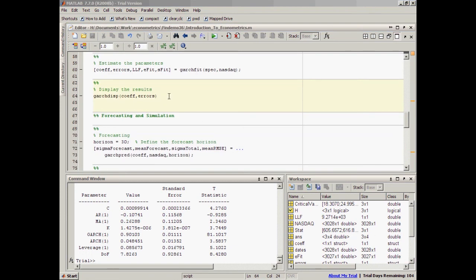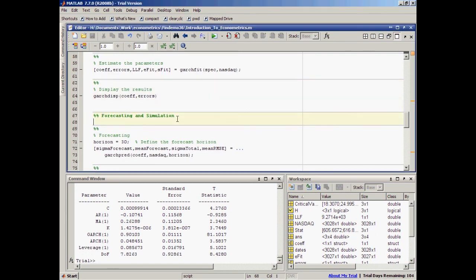Okay, now that our model parameters are estimated, let's go ahead and do some forecasting and simulation. I'll compute forecast for the NASDAQ return series 30 days into the future. So, I'll set the horizon to 30, and then I'll call our forecasting engine, garchpred, with the estimated model parameters, and the return data, and the time horizon that I just set.